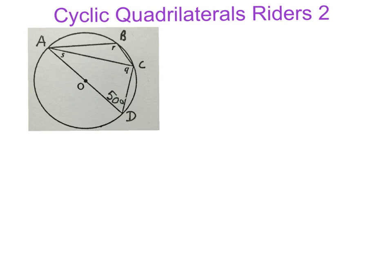Here is our first rider. We have a circle with a cyclic quadrilateral inside it. We have a diameter going through O, the center, which means we have a 90 degree angle here — angle in a semicircle. Do not think that you only need a cyclic quad in a full circle; it can also lie in half a circle. There is still a quadrilateral and it is a cyclic quadrilateral.